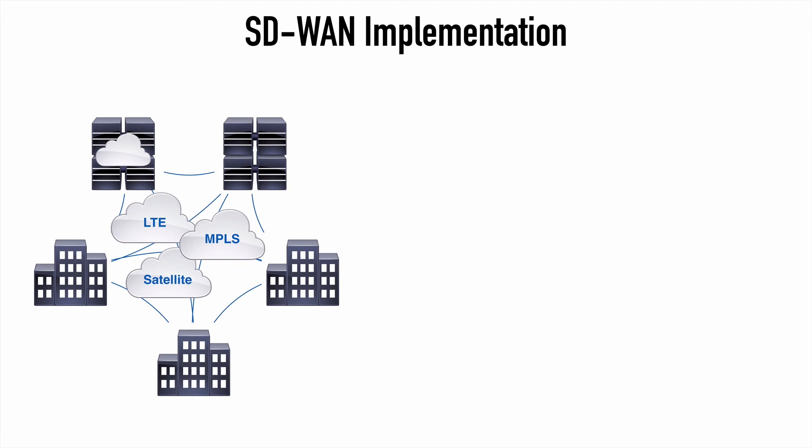Let's take a look at a very common way that we might see this implemented. Here we see a sample topology within which we have a main campus location, a couple of branch locations, a physical data center, and a cloud data center. All of these are interconnected through various means — we see MPLS, LTE, and satellite connections creating this network of sites. Remember that SD-WAN is an overlay technology, and that provides transport independence. So in other words, it doesn't matter what the physical underlying network infrastructure is — SD-WAN can work with any and all of that.